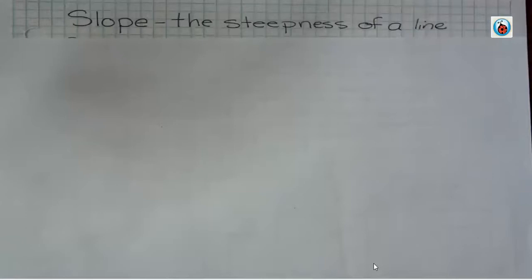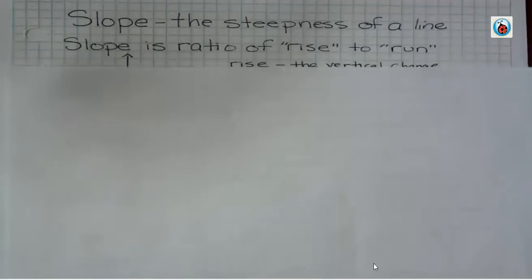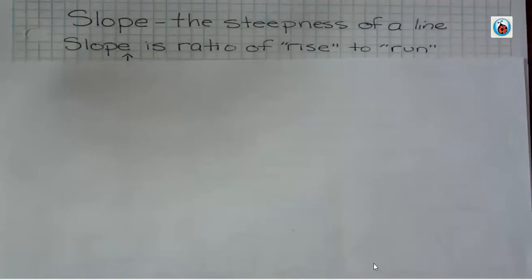Hello, I'm Carly McEvoy, and today I'm talking about slope. When you're talking about the slope of a line, it's just how steep it is — the steepness of a line — and it's actually a ratio of rise to run. I'll talk about what those terms mean.